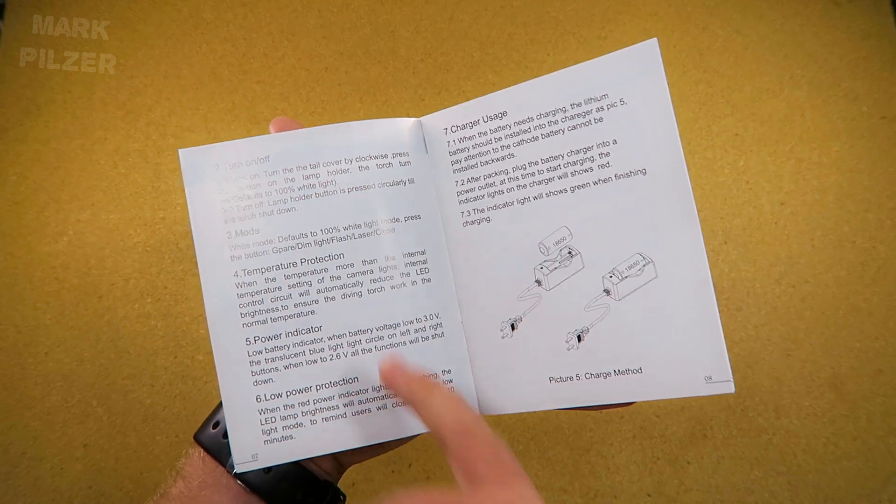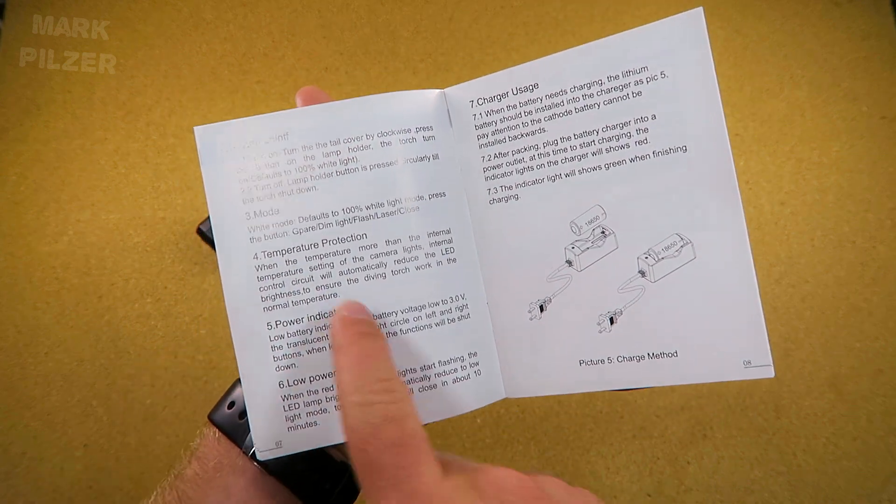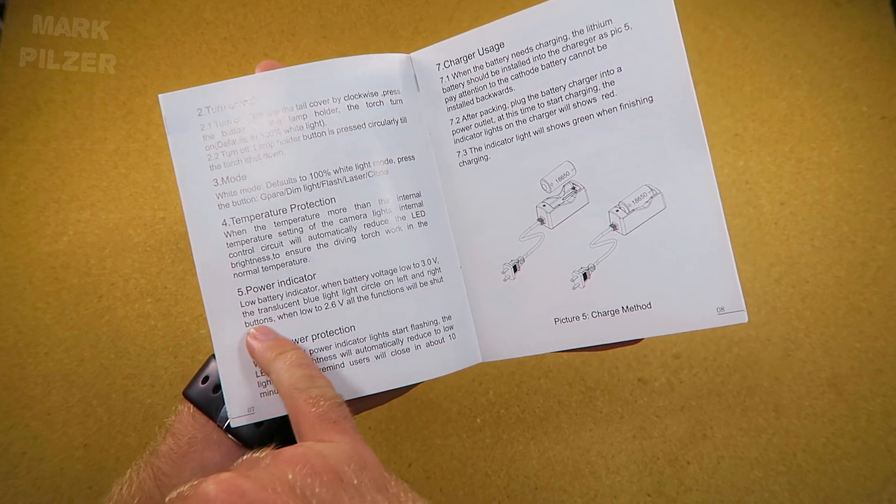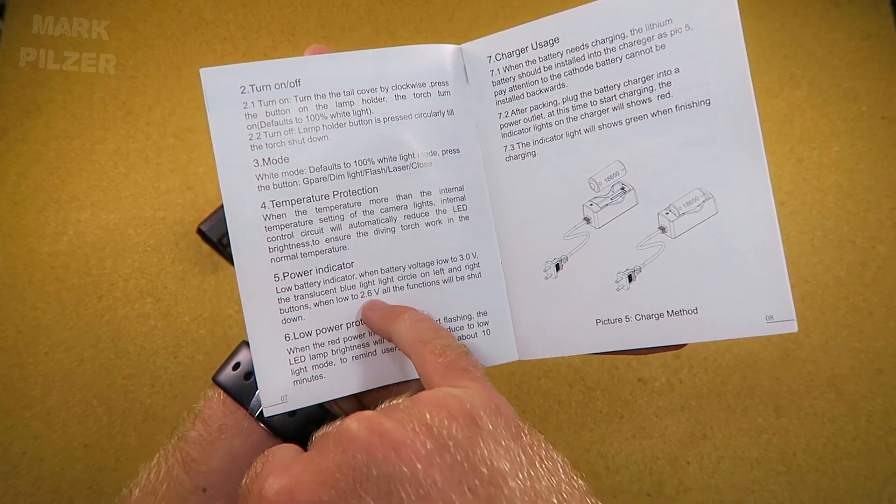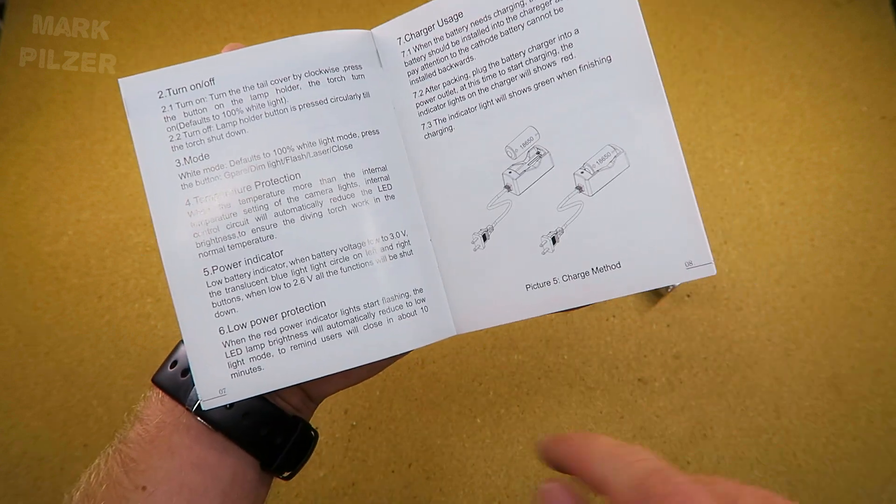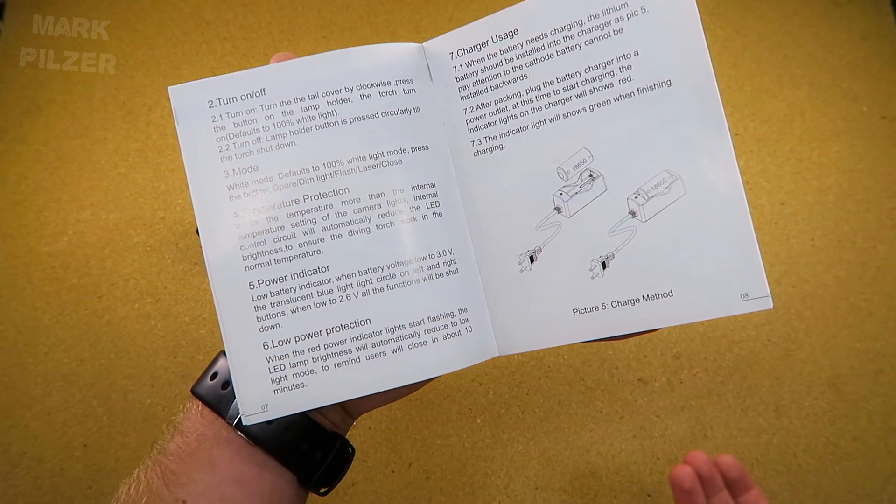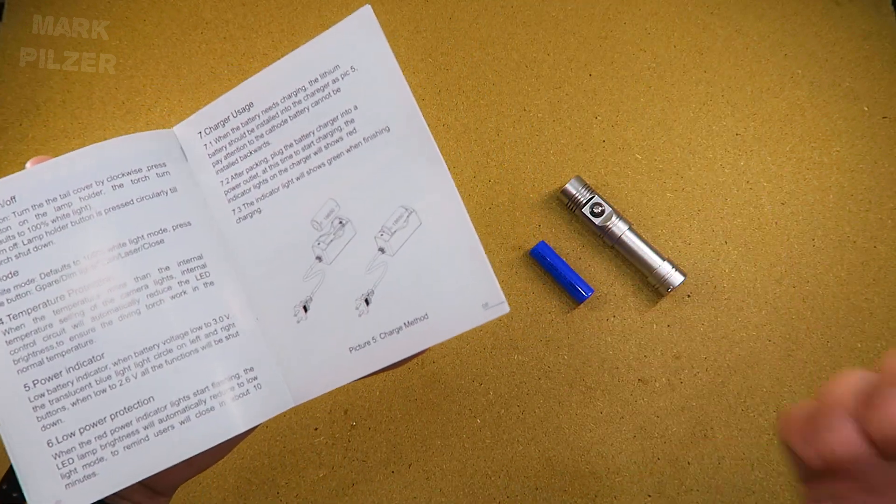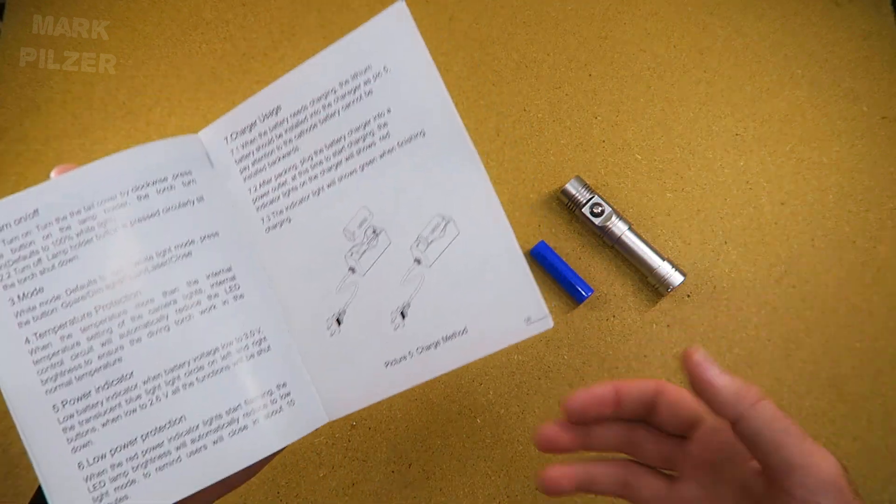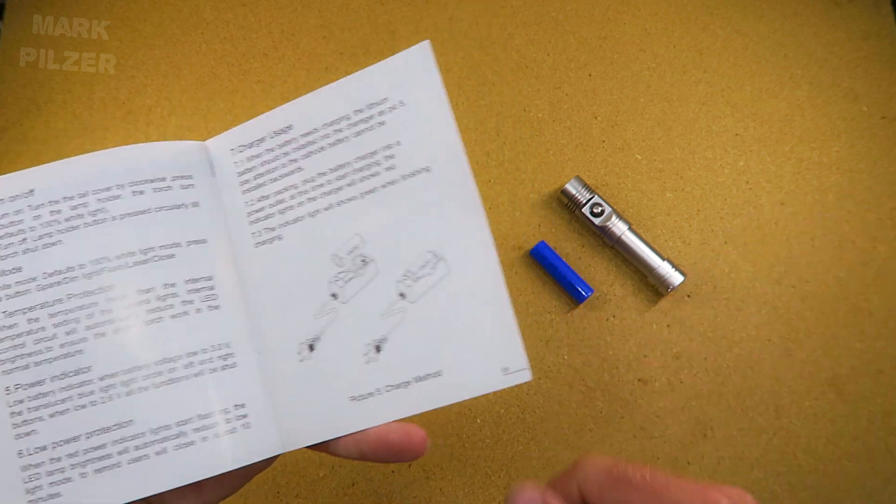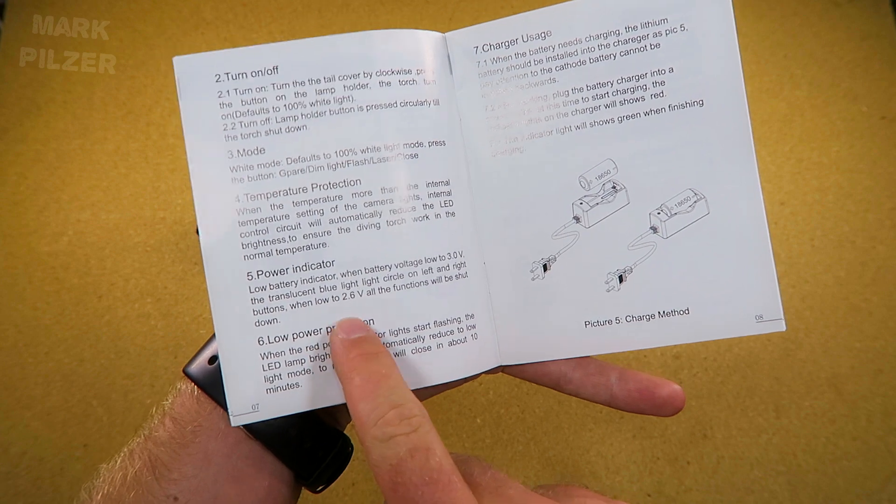You have here the indication that when it's at 2.6 volts the light will shut off. This is the battery voltage of course. What I also like is you have it on high mode, and in case the battery voltage gets very low, it will shut itself down to low mode automatically and then shut off once it reaches 2.6 volts.